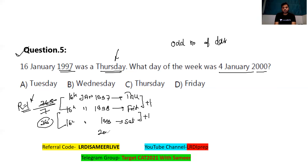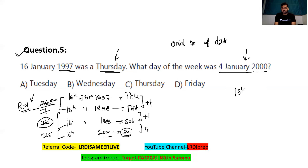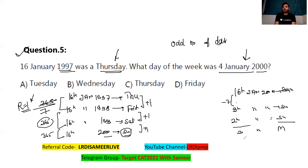On 16th January 2000 the day is Sunday, but I need the day on 4th January 2000. If I decrease by seven days, 9th January 2000 is also Sunday, and 2nd January 2000 is also Sunday. If 2nd January is Sunday, 3rd January is Monday, and 4th January is Tuesday. Option A is the correct answer.